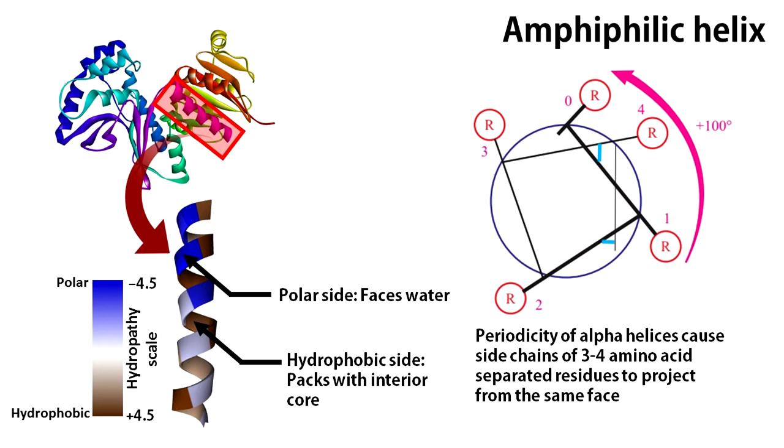Helices with this character frequently occur on the surface of the protein where their polar faces are in contact with bulk water while hydrophobic faces stabilize helix helix packing with the protein core.